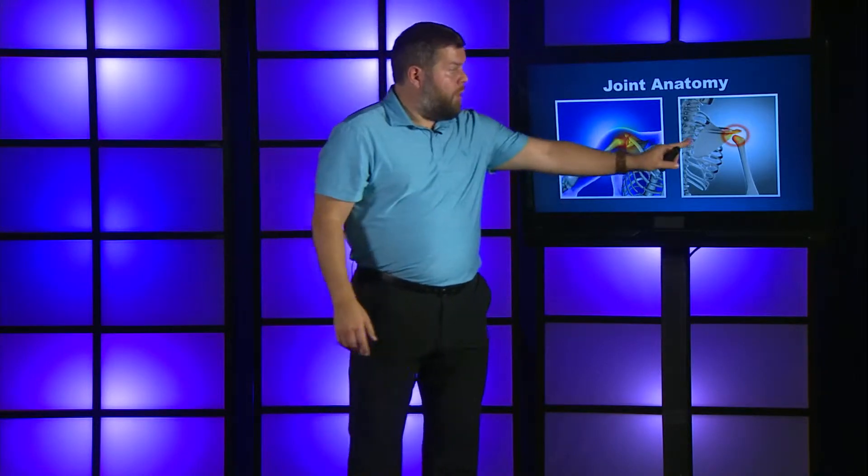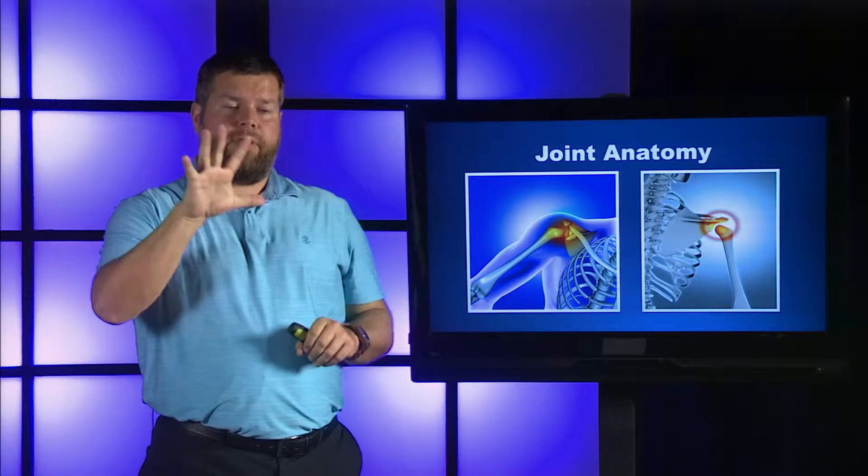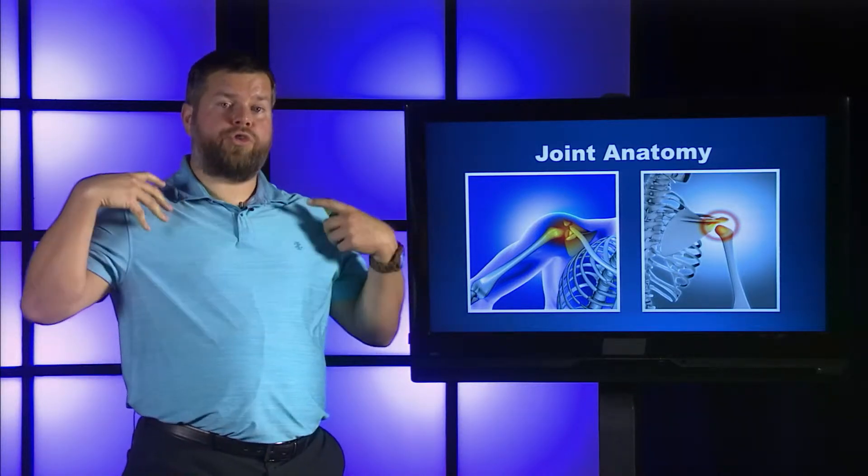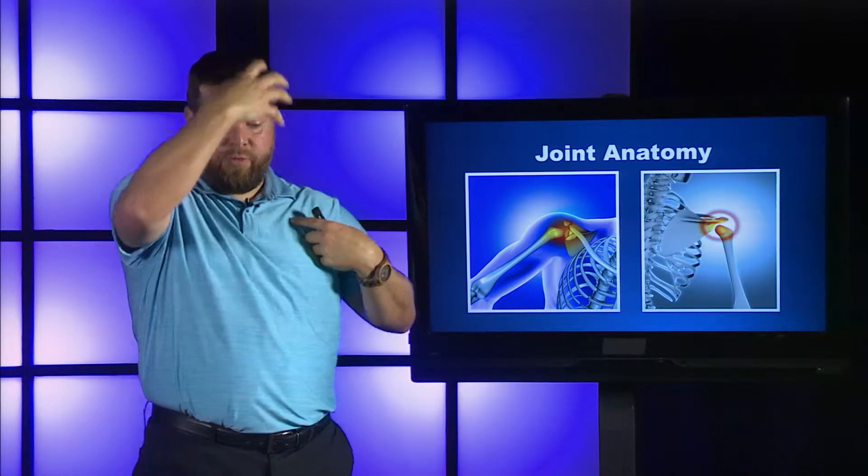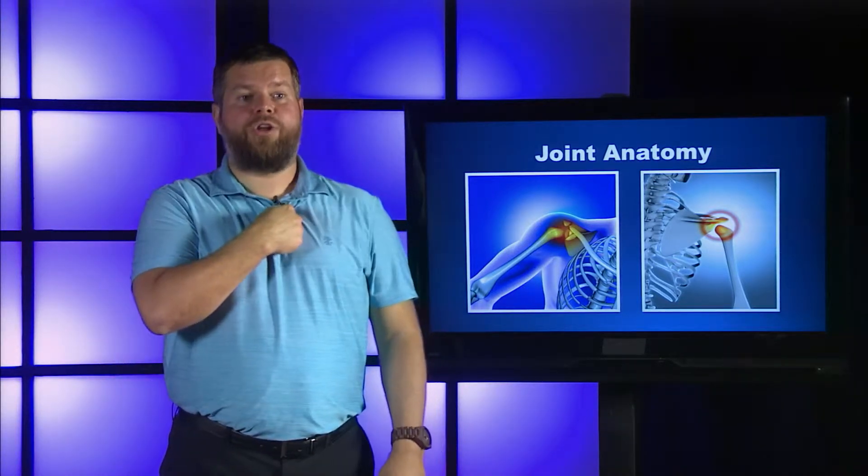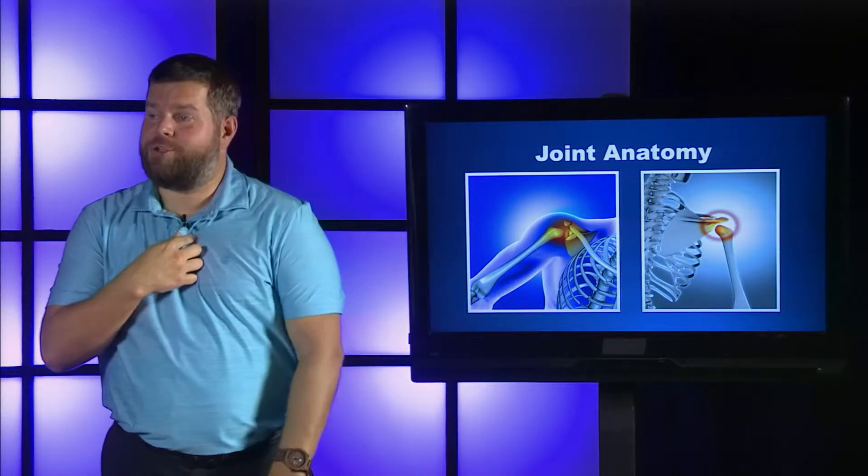The scapula, which is part of the shoulder girdle, actually floats on top of the backside of the body. The only place that the whole shoulder girdle actually articulates with the skeleton itself is at this one spot right here called your sternoclavicular joint.